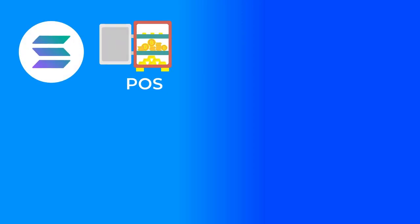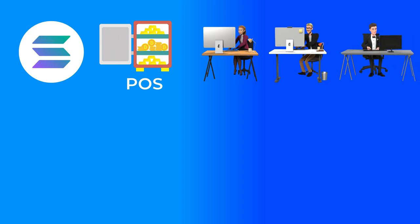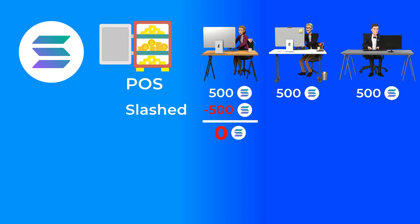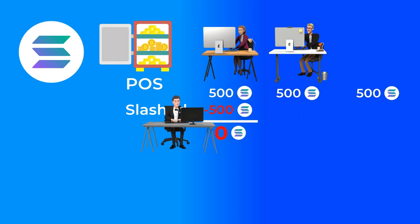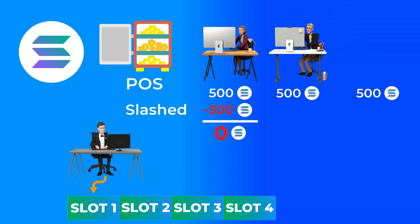The Solana network uses the Proof of Stake consensus mechanism to confirm transactions. In a Proof of Stake system, validators lock up a large amount of tokens to be able to verify transactions and earn rewards. If they do anything shady, they lose their tokens in what is known as getting slashed. Usually, for each block or time slot, the network chooses a validator to verify the transactions, and the other validators vote on his block, either accepting or denying his work.